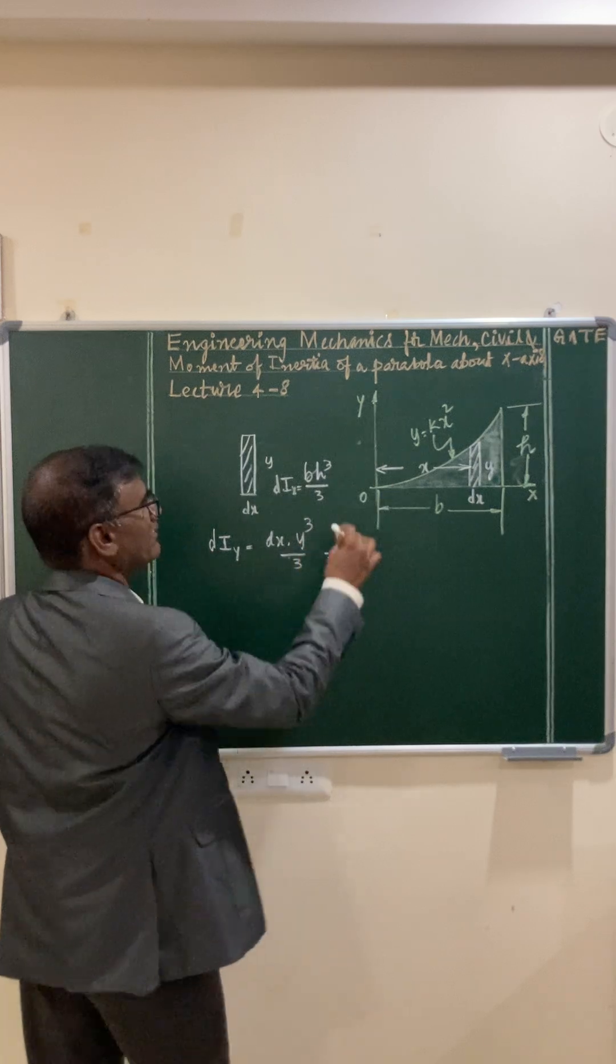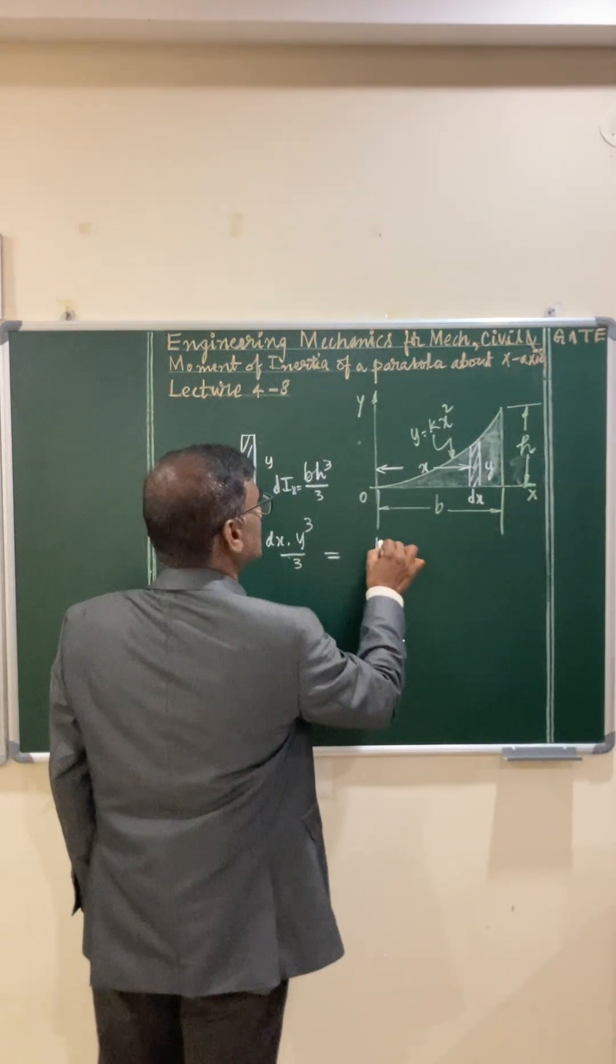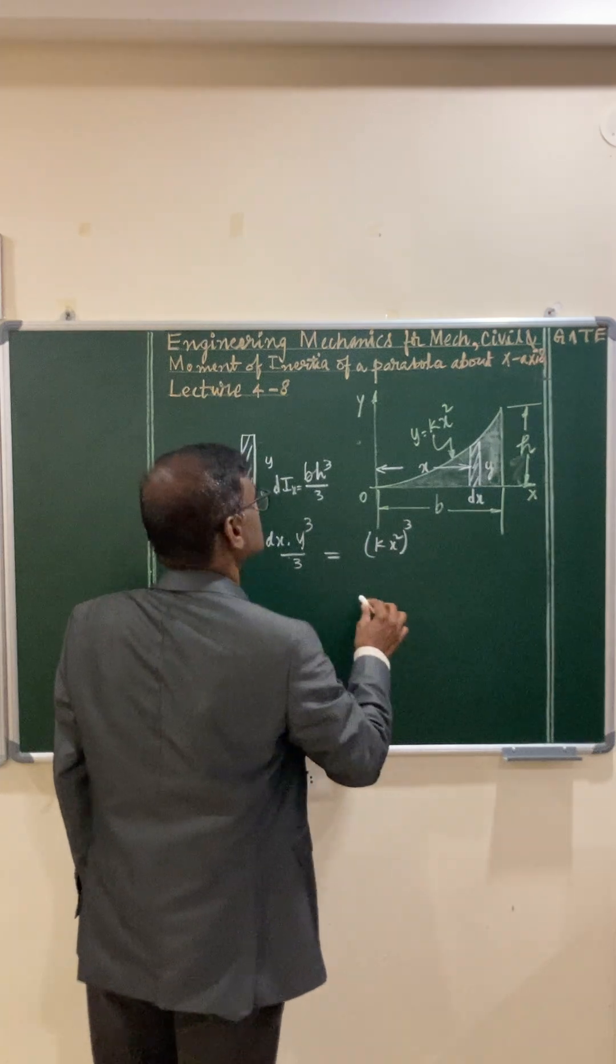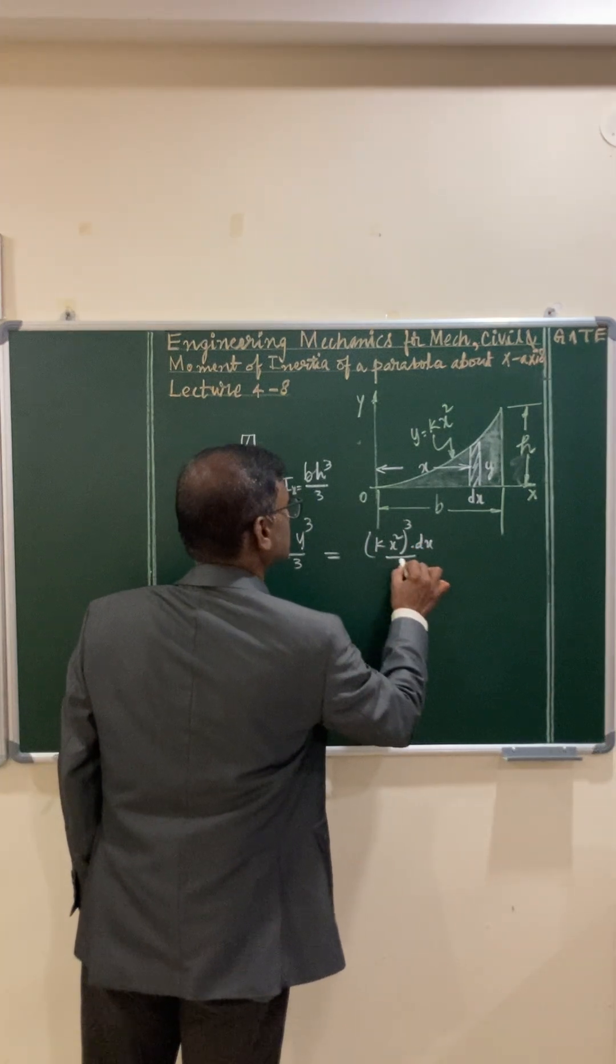So here, substitute the y value. It is kx² whole cubed, that is y³ into dx by 3.